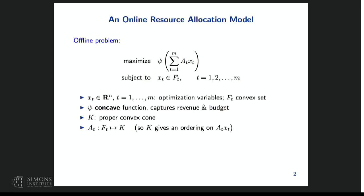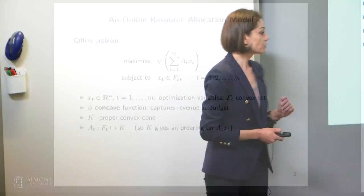F_t's are convex sets. We assume psi is a concave function. This captures two things: revenue and budget. You can think of it as revenue plus negative of violation of budget. There is a cone involved—k is a proper convex cone. The x_t's belong to the cone, and the a_t's are cone-preserving, so the output a_t x_t also belongs to the cone. The cone gives an ordering on the a_t x_t's. Typical cones are R^n_+ (positive orthant, entry-wise ordering) or the positive semi-definite cone (matrix ordering).